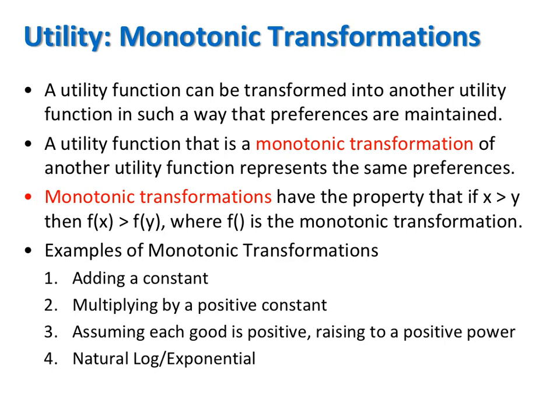A utility function that is a monotonic transformation of another utility function represents the same preferences. Monotonic transformations have the property that if x is greater than y before the transformation, then the transformation of x will be greater than the transformation of y. Examples include adding a constant, multiplying by a positive constant, assuming each good is positive, raising to a positive power, and applying the natural log or exponential function.